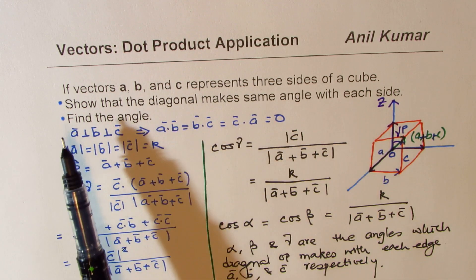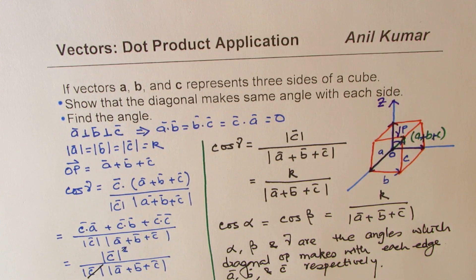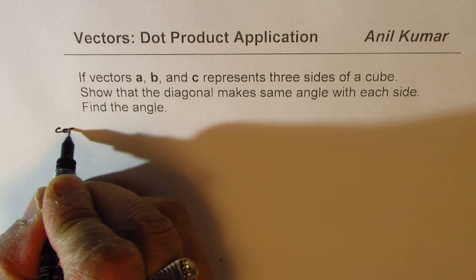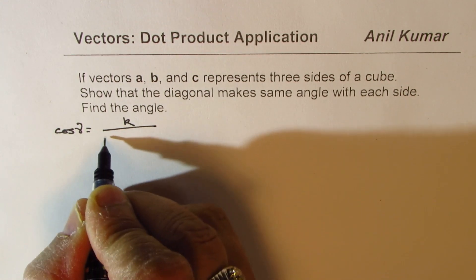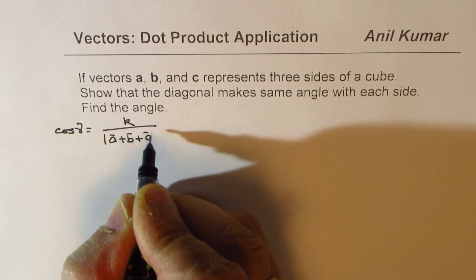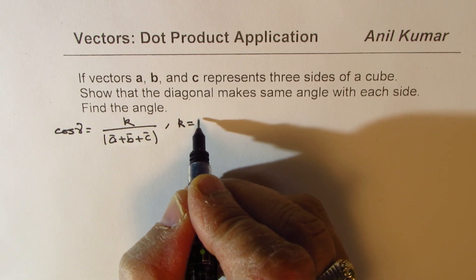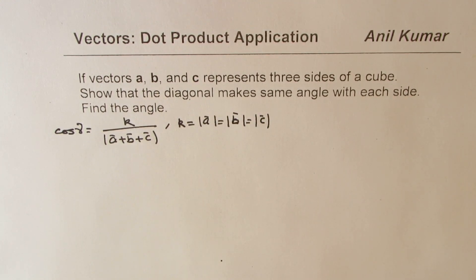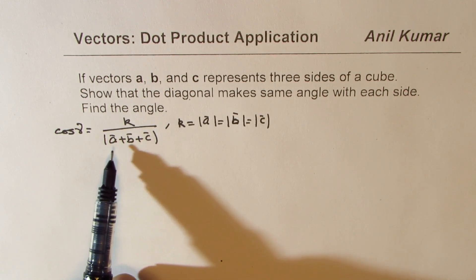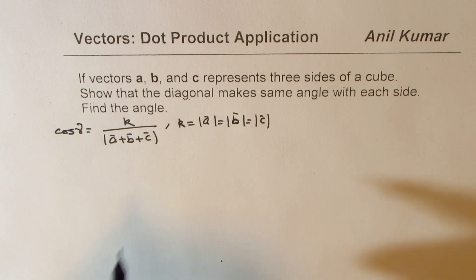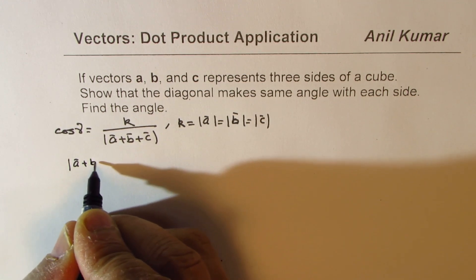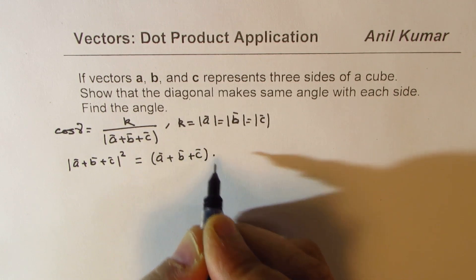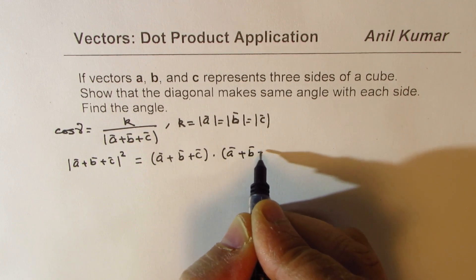Now let's extend this and find the angle. Let me rewrite the expression we derived: cos of gamma equals constant k divided by the magnitude of a plus b plus c, where k equals the magnitude of a, and all the magnitudes a, b, and c are equal. To find the angle, we need to find the magnitude of a plus b plus c. We know that the square of the magnitude of a plus b plus c equals the dot product of a plus b plus c with a plus b plus c.